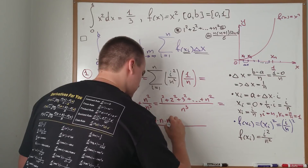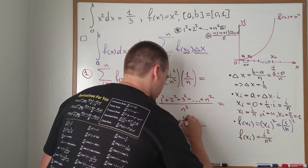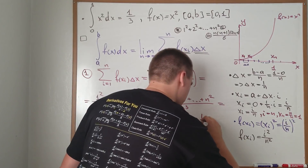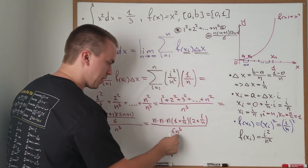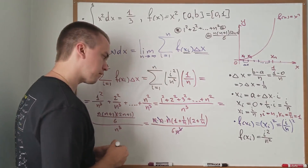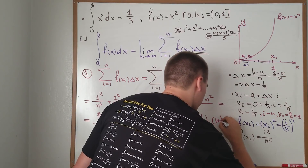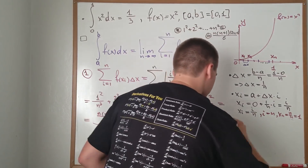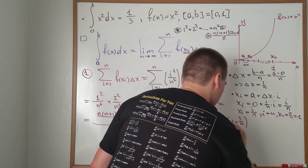I can see that we have n³ on top from the factored terms and 6n³ on the bottom, so the n³ cancels. Our sum therefore simplifies to (1 + 1/n)(2 + 1/n)/6. We've completed Step 1.